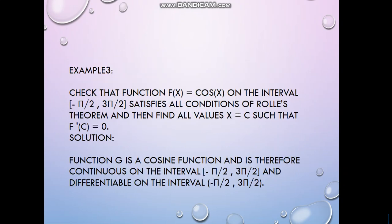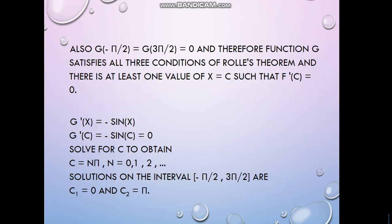Let's see one more example. f(x) = cos(x) on the interval −π/2 to 3π/2. Functions like cos(x) and sin(x) are always continuous and differentiable on any given interval. The cosine function is continuous and differentiable because for any finite value of x, cos(x) always gives a finite value.